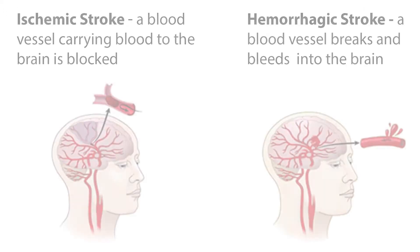There are two types of strokes: ischemic and hemorrhagic. Ischemic strokes are by far the most common and occur when a blood vessel carrying blood to the brain is blocked. Hemorrhagic strokes occur when a blood vessel breaks and bleeds into the brain.